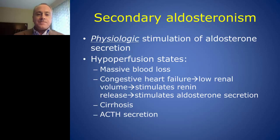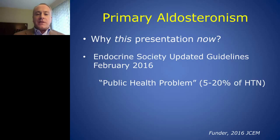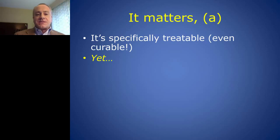What's the importance of primary aldosteronism? It actually has to do with the updated Endocrine Society guidelines just released about a month ago, which state that this is a real public health problem — that it's being underdiagnosed and undertreated, and that it consists of a sizable portion of the primary hypertensive population. Why does this matter? It's specifically treatable. You can even cure primary aldosteronism, yet no one seems to be doing much about it clinically.